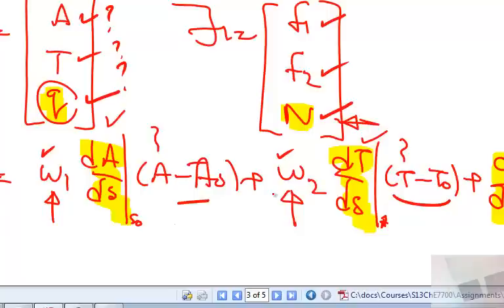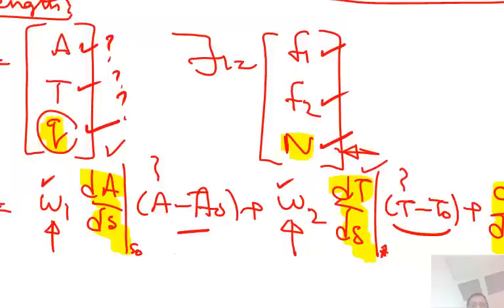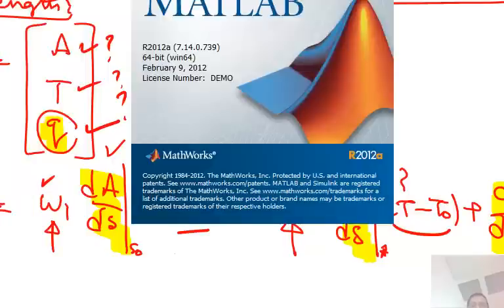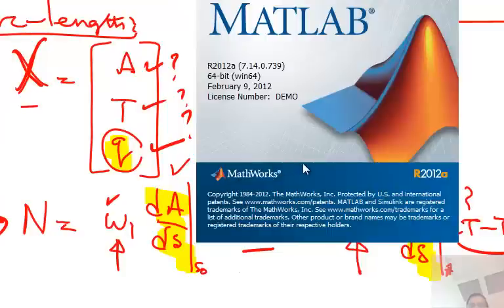Question: where are we evaluating those derivatives? That's a good question. The derivatives dA/dS, dT/dS, dQ/dS are evaluated at the current location — at the current reference point. Before I can start the arc length continuation, just like before starting Euler-Newton continuation, I need to get a solution with the Newton method. The first reference point is where I make some arbitrary guess and solve using Newton's method.